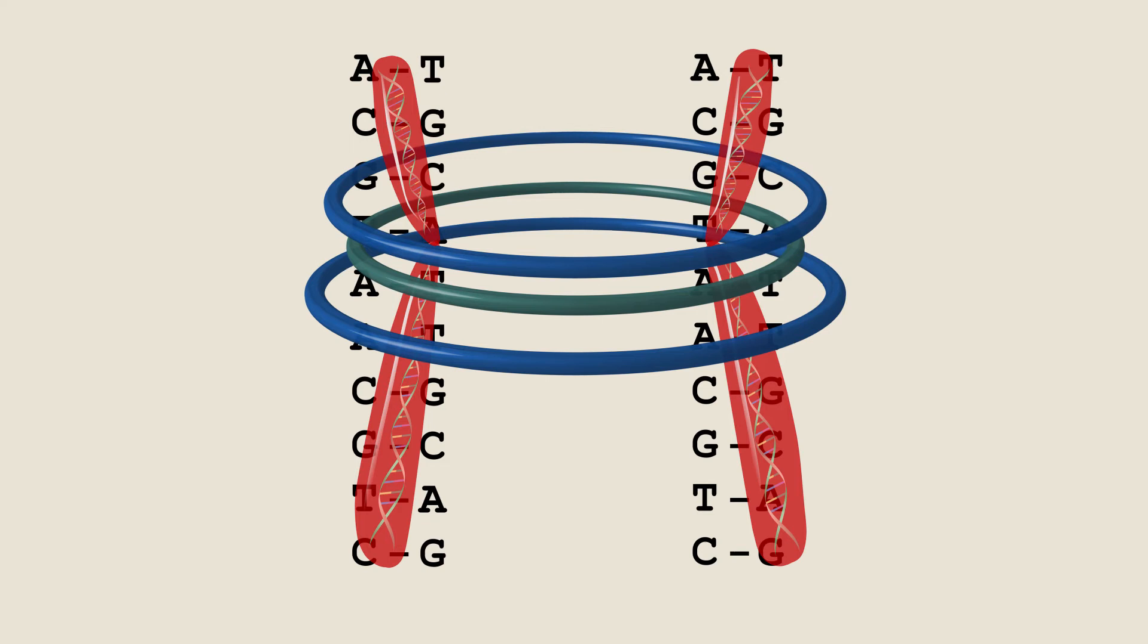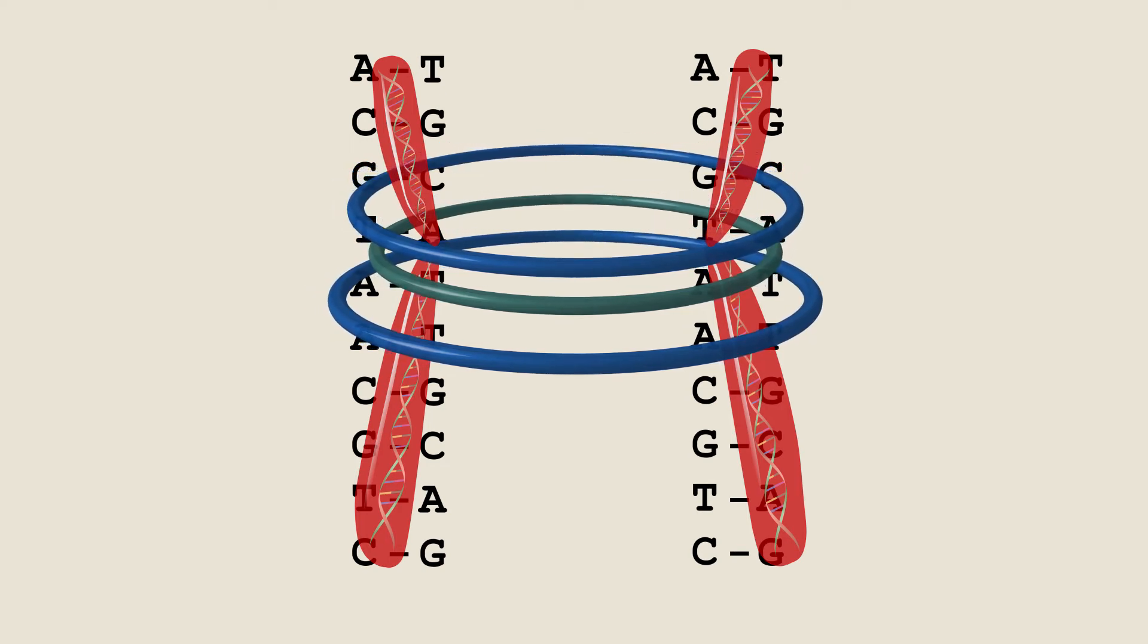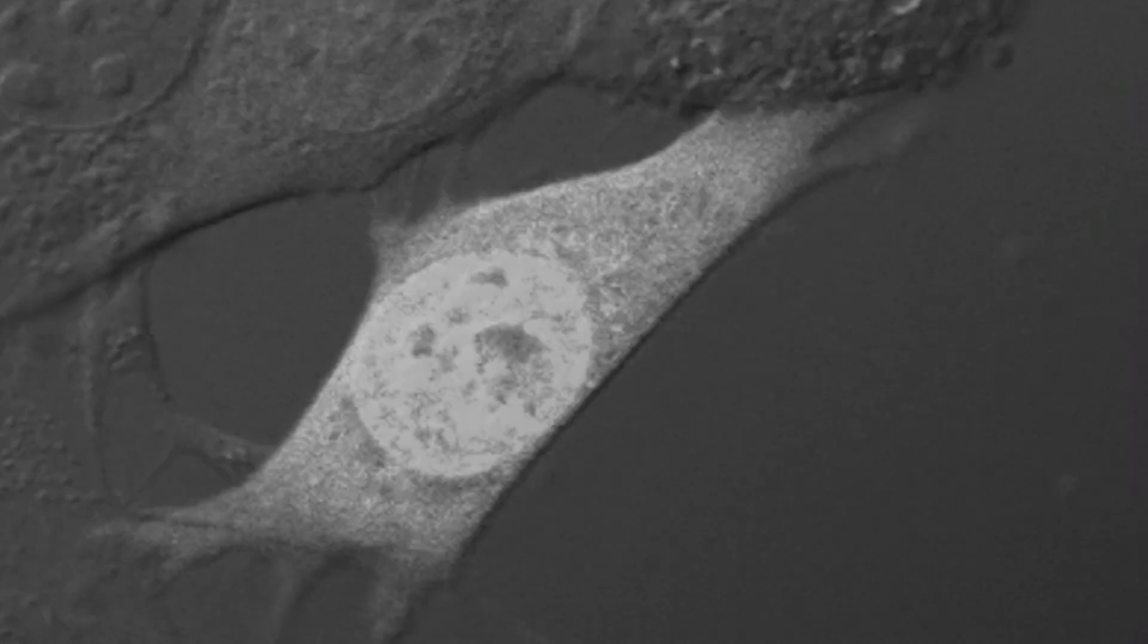The two sister chromatids of each chromosome are attached to each other by proteins. Throughout interphase, the chromosomes are not condensed and there is no way to see them.